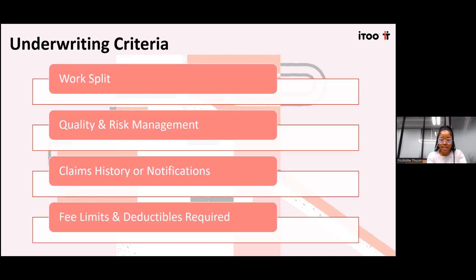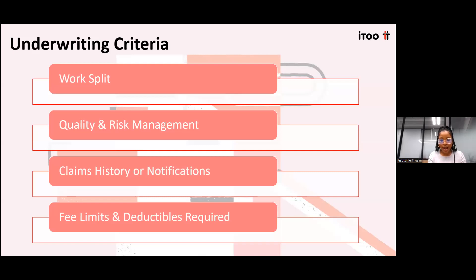Claims history or notification is very important given that our policies are on a claims-made basis. We need to know at the inception of the policy that they've had no claims, or that they've notified us of any matters they may be aware of at the time of completing the proposal form or incepting the policy. We also want brokers to indicate the limits and deductibles required - there's a section on the proposal form for this.